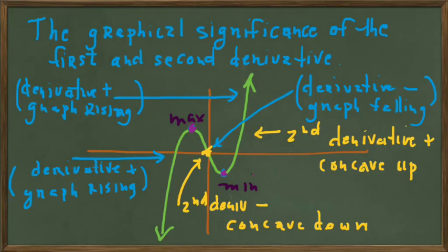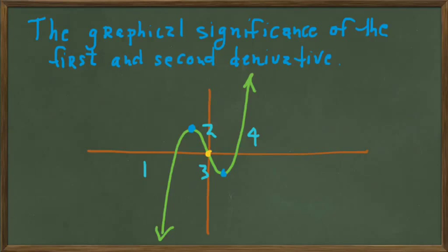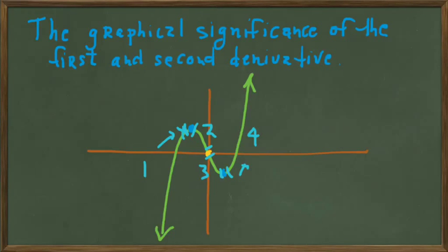We call them relative because this point is not the maximum value of the graph overall — the graph rises above it — and this is not the overall minimum because the graph falls below it. But relative to the points around them, they are respectively the maximum and minimum value. Now, I want to clean up the graph and label four regions separated by the blue and yellow dots, identifying in each region what sign the first and second derivatives have.